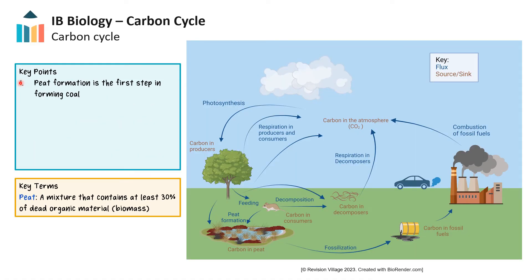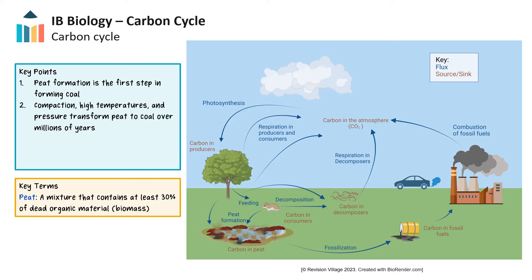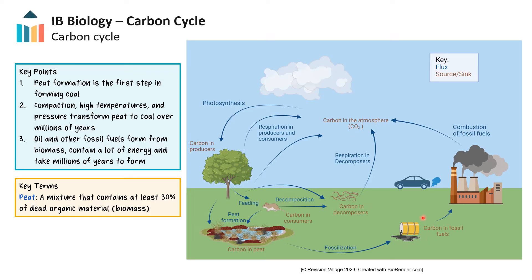Peat formation is the first step in forming coal. If peat is continually covered in sediment through compaction, high temperatures and pressures, through millions of years of formation, peat will slowly transform into coal. Similar to coal formation, oil is formed through burial of organic matter and long-term geologic processes occurring over millions of years. However, in oil formation, the carbon source comes from the burial of algae and plankton in ocean or marine environments.